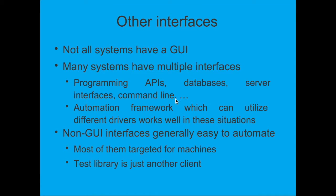Test other interfaces: not all systems have a GUI. Many systems have multiple interfaces like programming APIs, databases, server interfaces, and command lines. These should also be covered as part of automation testing. An automation framework that can utilize different drivers works well in this situation. A non-GUI interface is generally easy to automate; most are targeted for machines, and the test library is just another client, so interaction is pretty easy.